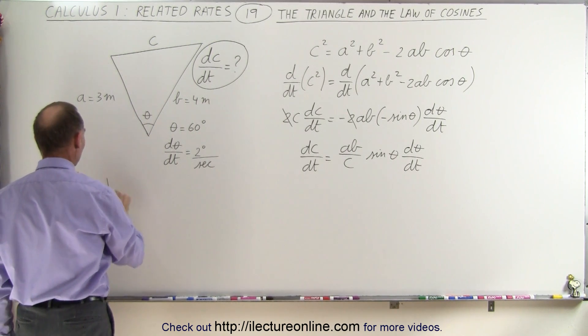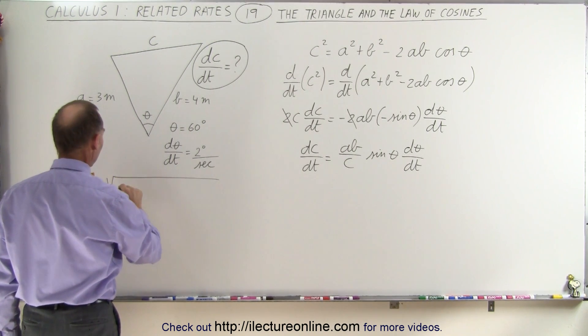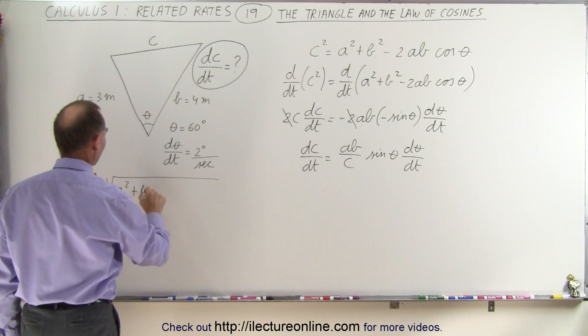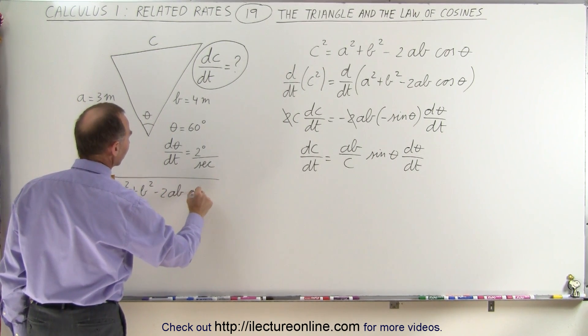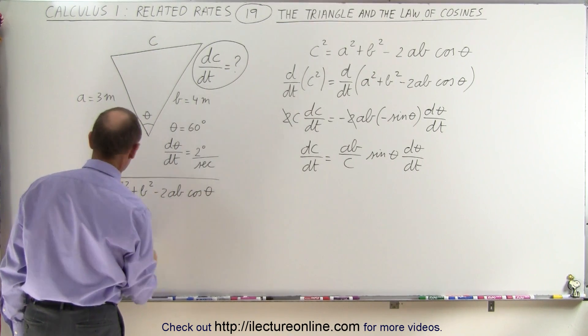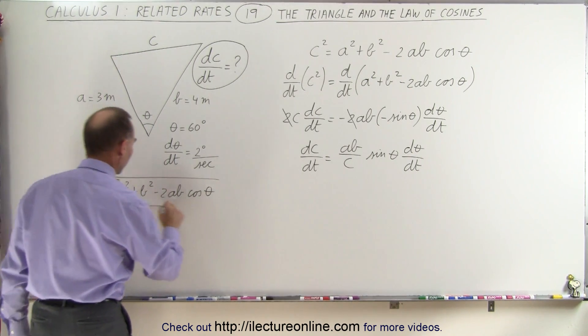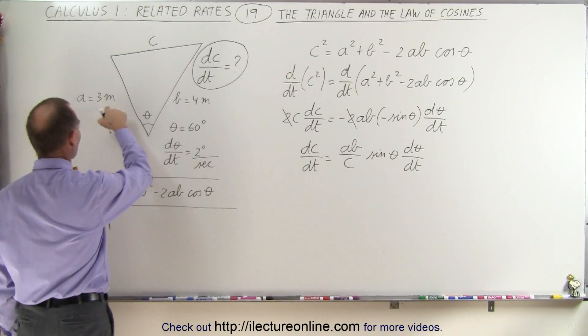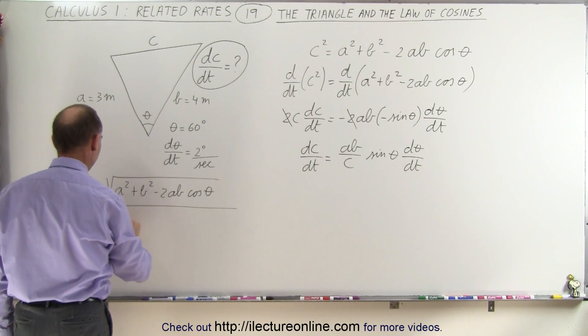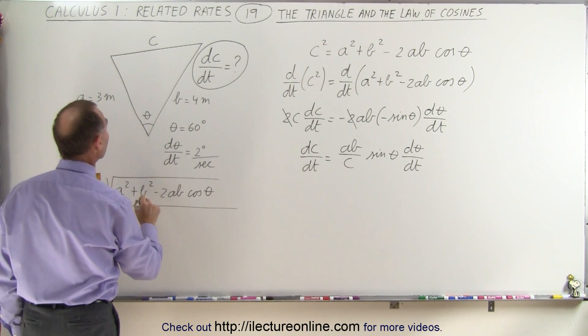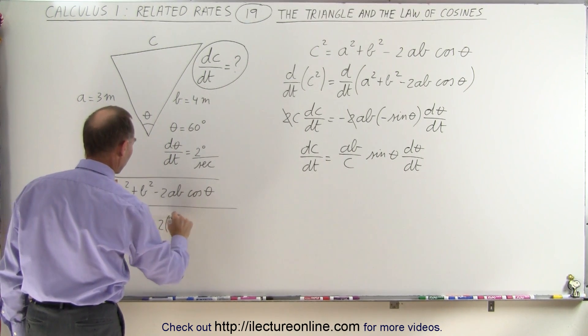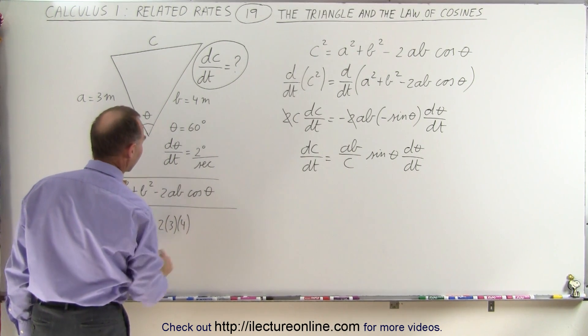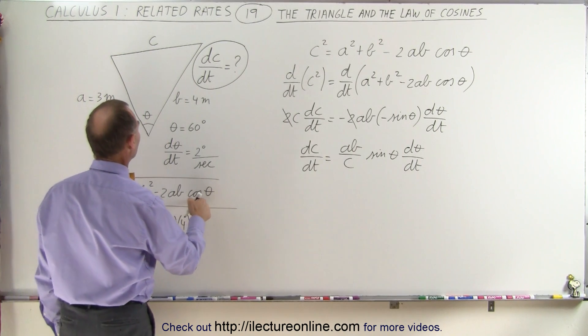C is going to be equal to the square root of A squared plus B squared minus 2AB times the cosine of theta, which is equal to the square root of A is 3, that would be 3 squared, plus B is 4, that would be 4 squared, minus 2 times 3 times 4 times the cosine of theta.